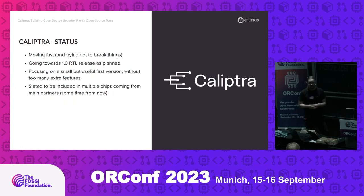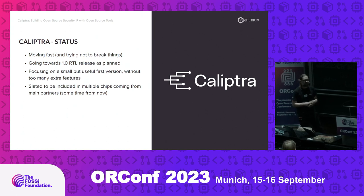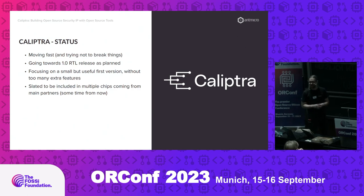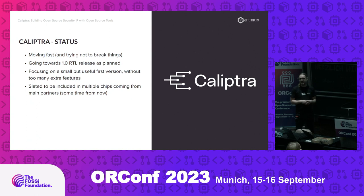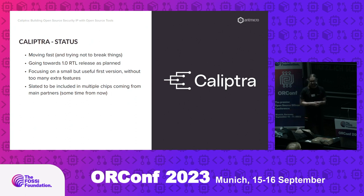The status of Calyptra is that it's a pretty fast-moving project. Every time I talk about it, a lot of stuff happens. It's trying to move fast and not break too many things, because it's a security project — so testing is an important aspect, which I will cover later in the presentation. We're coming toward a 1.0 RTL release. We're not really delayed in any way, and we're focusing on a pretty small but useful first version. It's meant to be pragmatic, and the cool thing is that this is slated to be included in some real-world implementations.